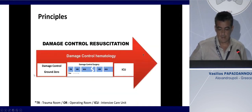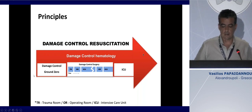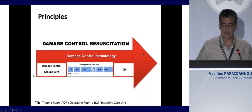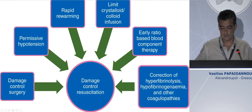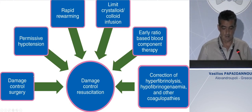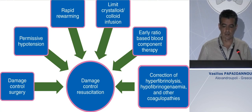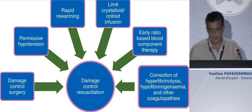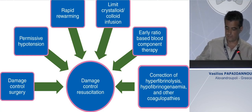One of the reasons for these changes in the trend of mortality could be the implementation of the damage control resuscitation strategy. This strategy includes different components: damage control surgery, permissive hypotension, rapid rewarming of the patient, limited use of fluids in general, early ratio-based blood component therapy, and correction of different coagulation disorders such as hyperfibrinolysis.